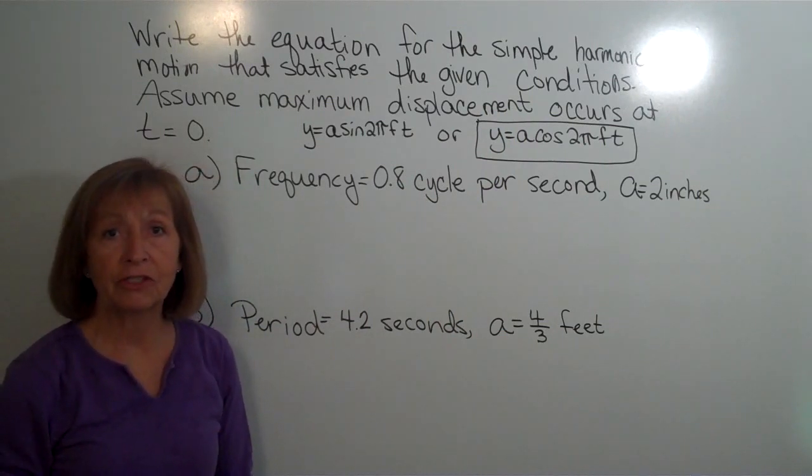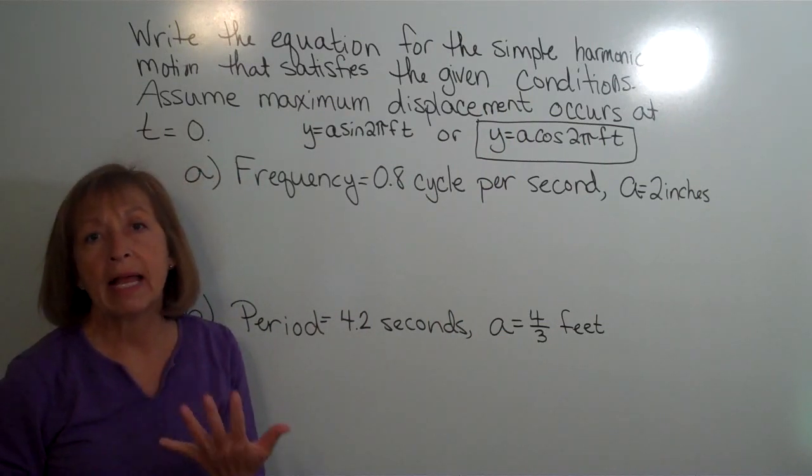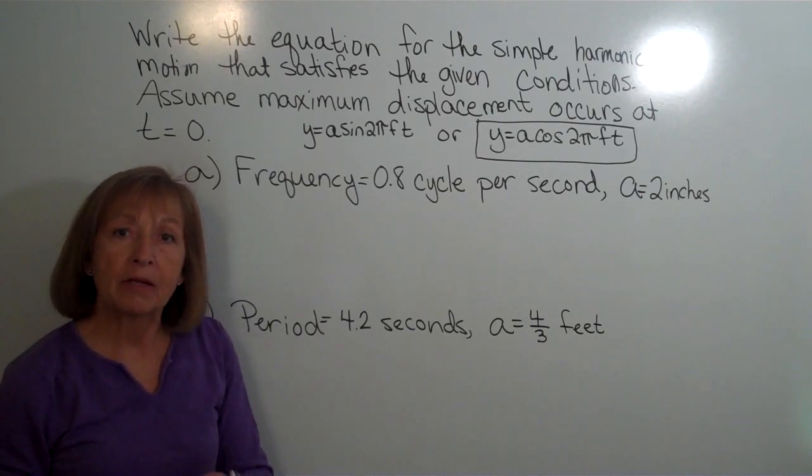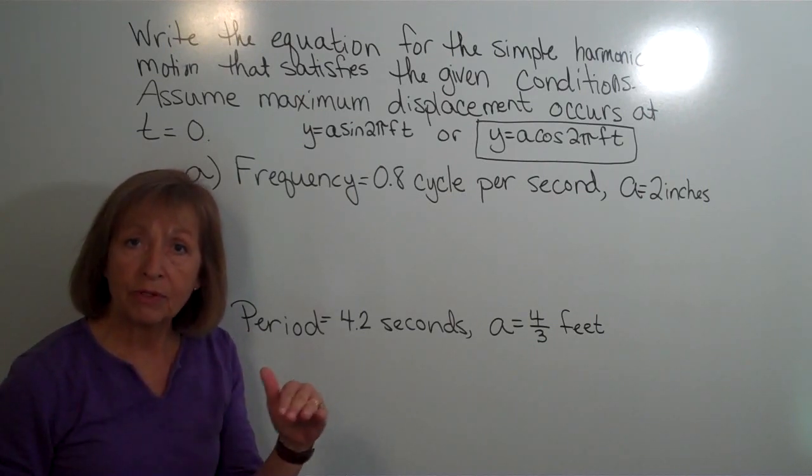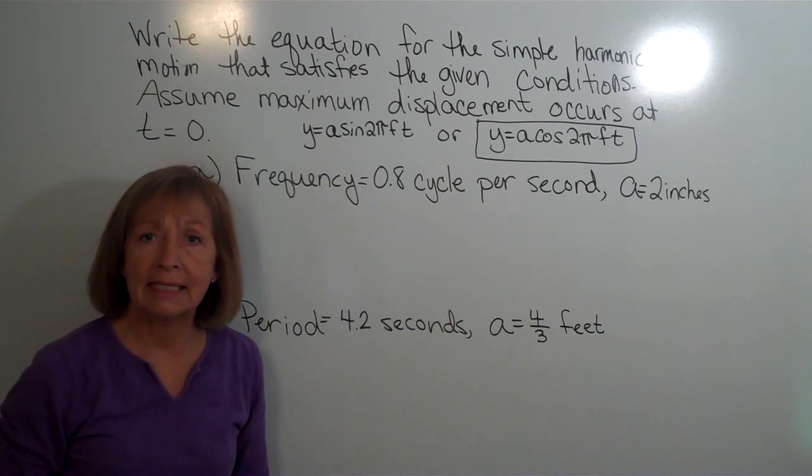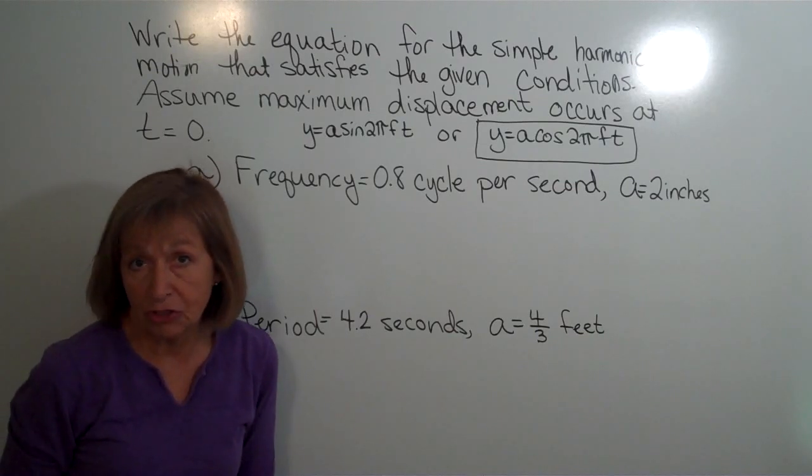Because remember the cosine function has its maximum y output, or the maximum distance away from the horizontal axis, when t equals zero, if it's not been shifted.